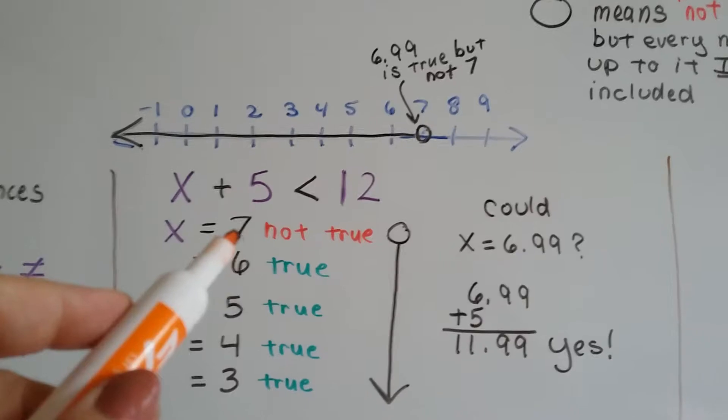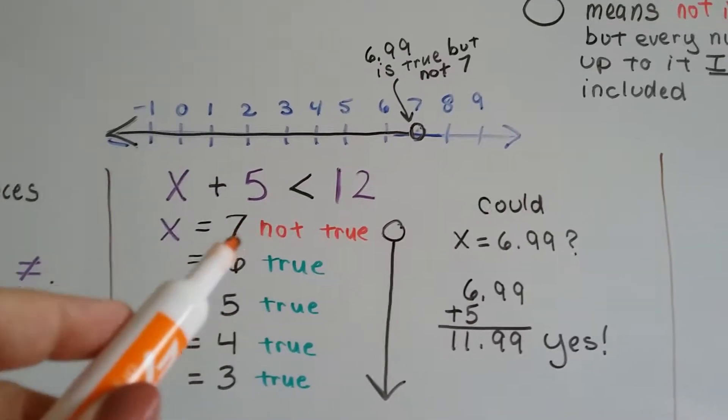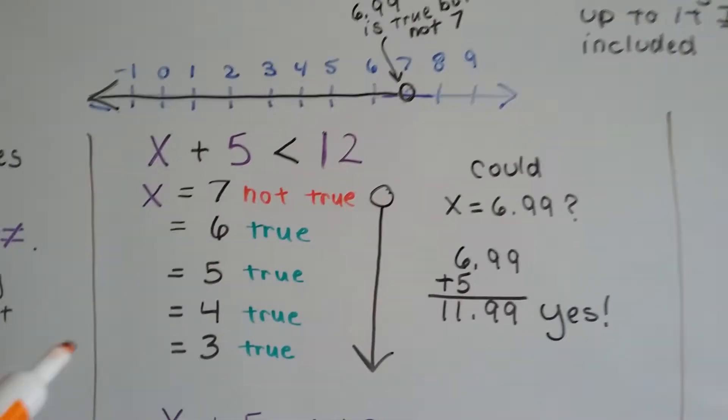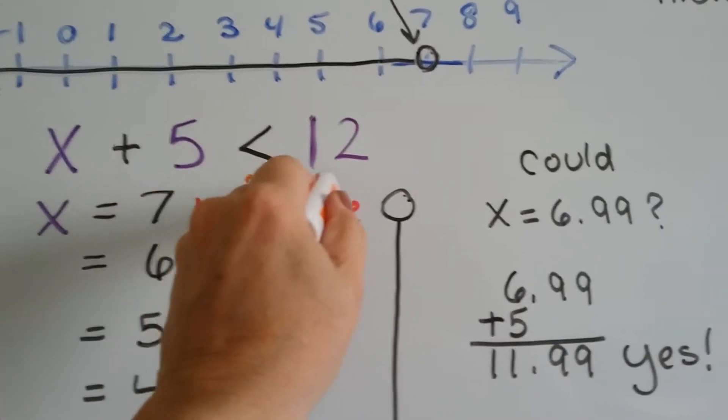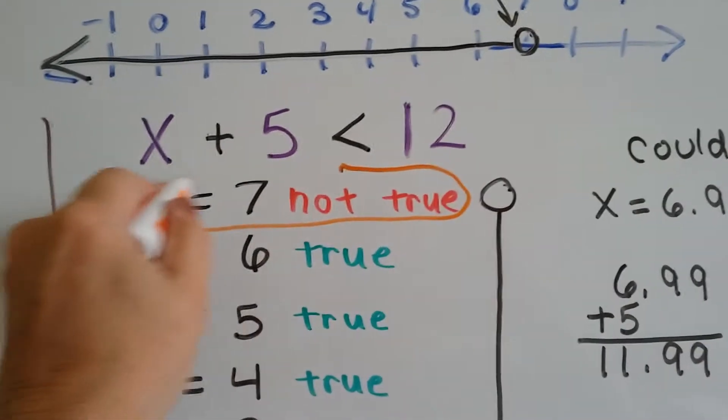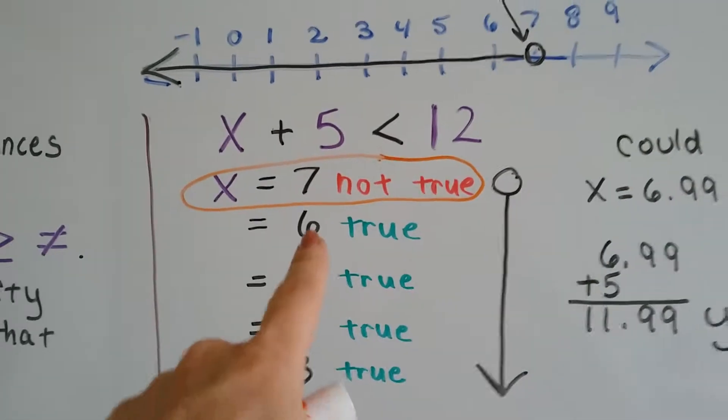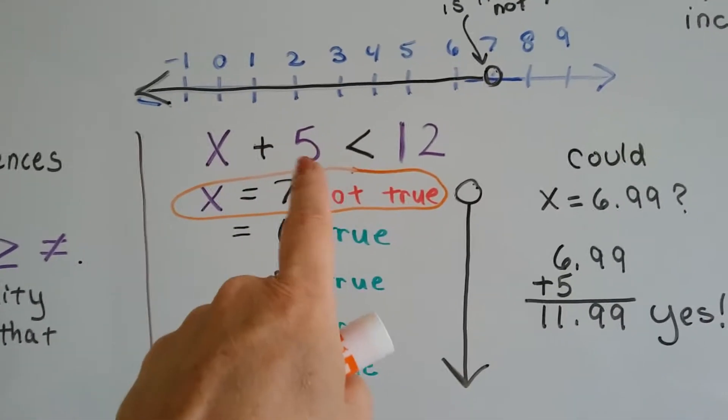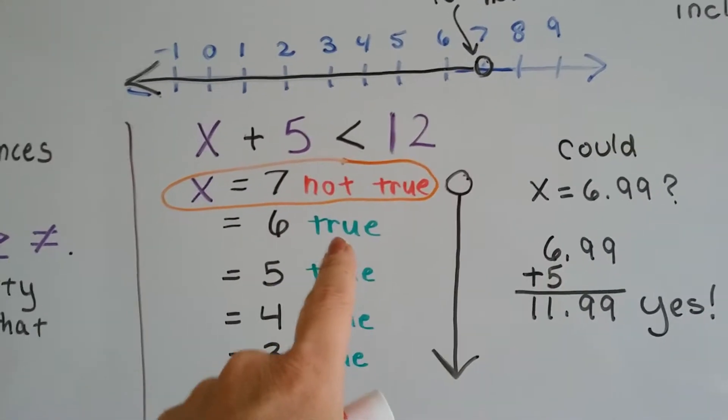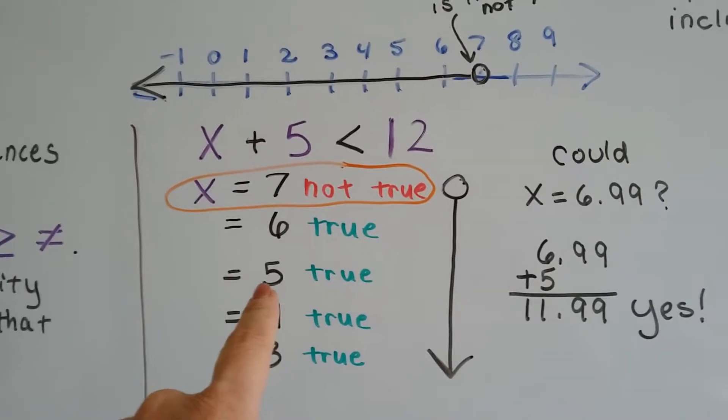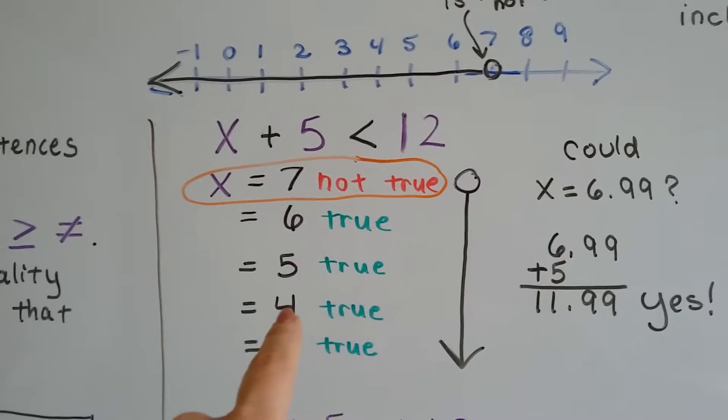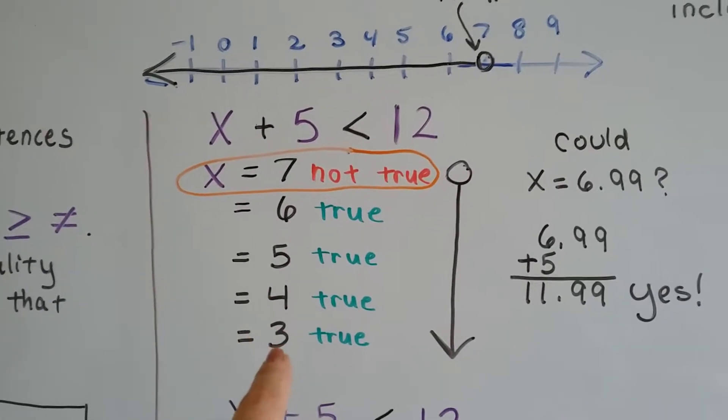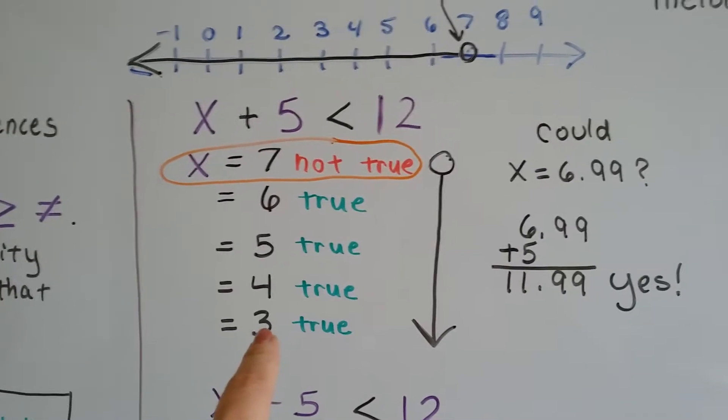Could x be 7? 7 plus 5 is 12, so that makes it not true. X cannot be 7. What if it were 6? Could x be 6? 6 plus 5 is 11, that's less than 12. That's true. 5 plus 5 is less than 12, that's true. 4 plus 5 is less than 12, that's true. And 3 plus 5 is less than 12, that's true.